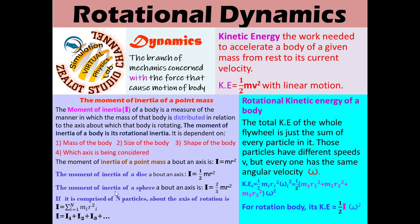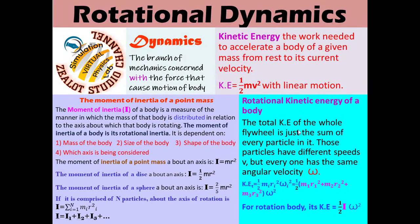Kinetic energy is the work needed to accelerate a body of a given mass from rest to its velocity. Linear kinetic energy is one-half mv². The rotational kinetic energy of a body is the total kinetic energy of the whole rotating system — it is the sum of every particle's kinetic energy. Those particles have different speeds but all share the same angular velocity.